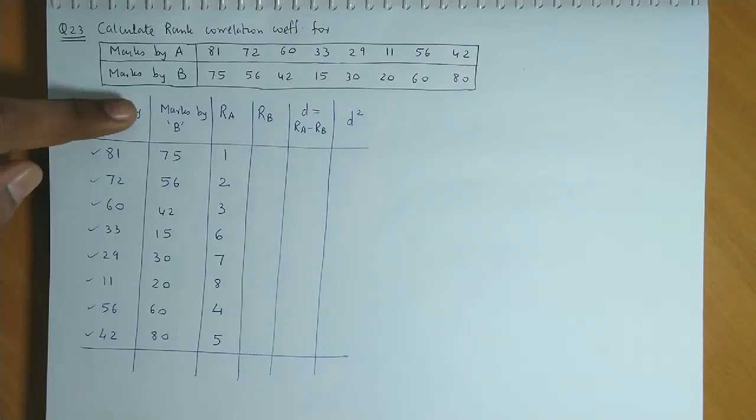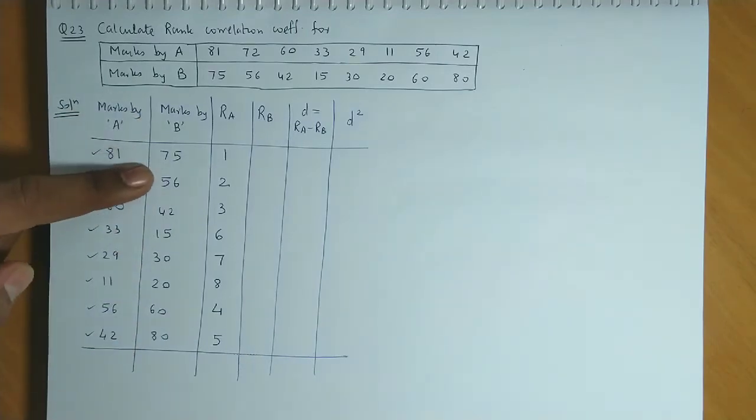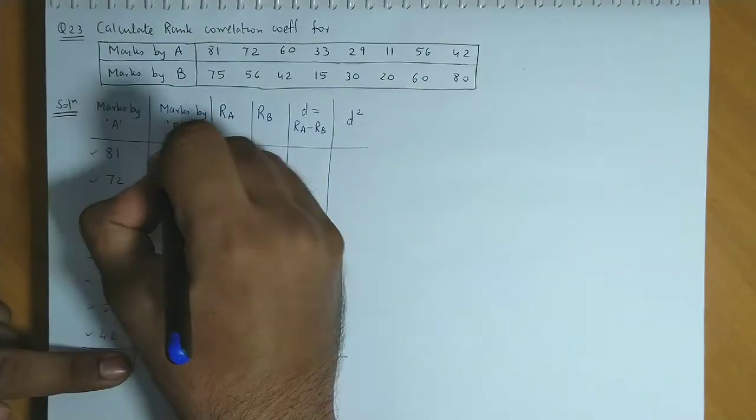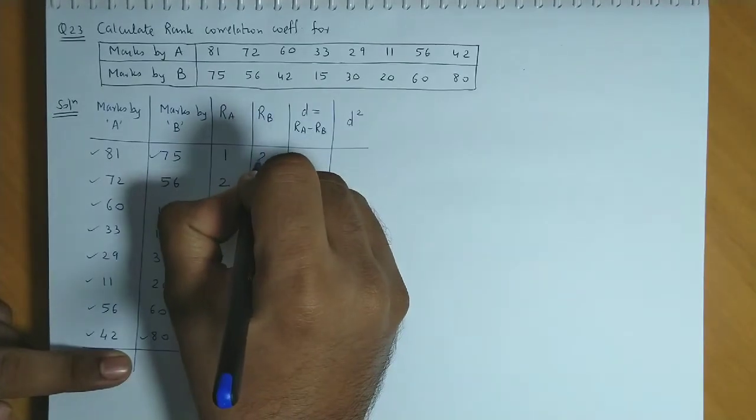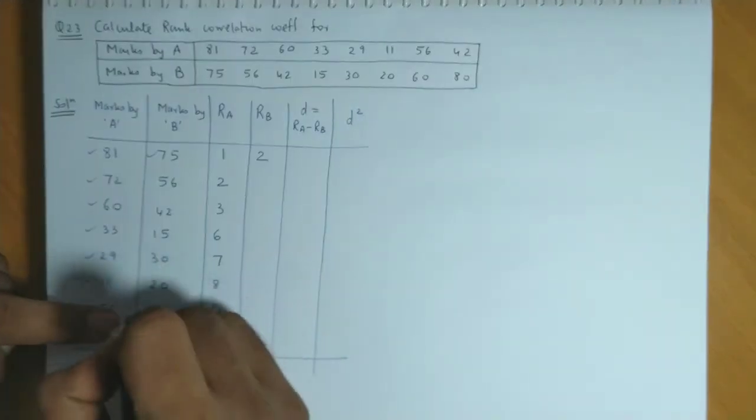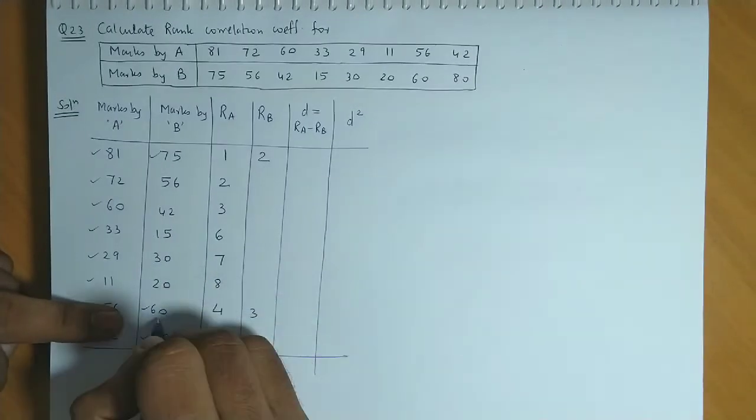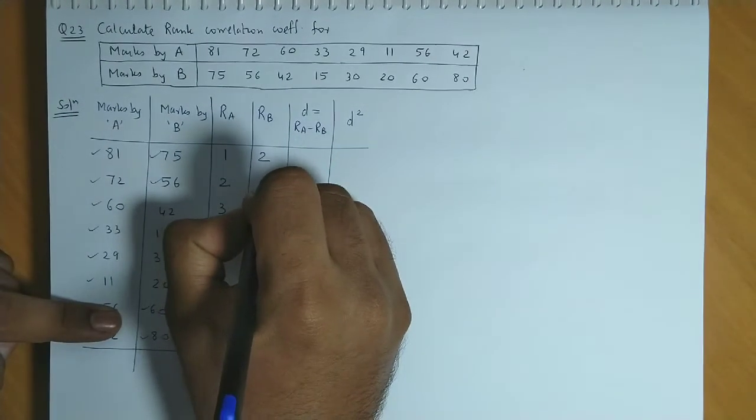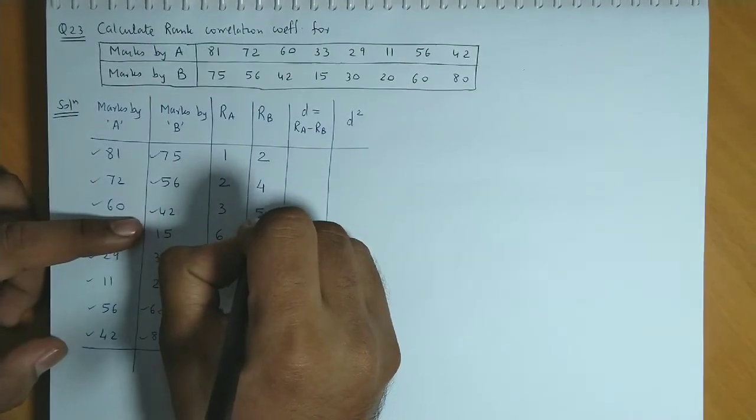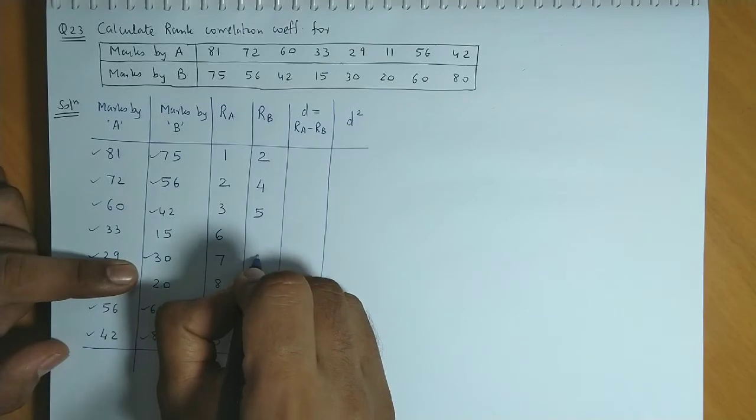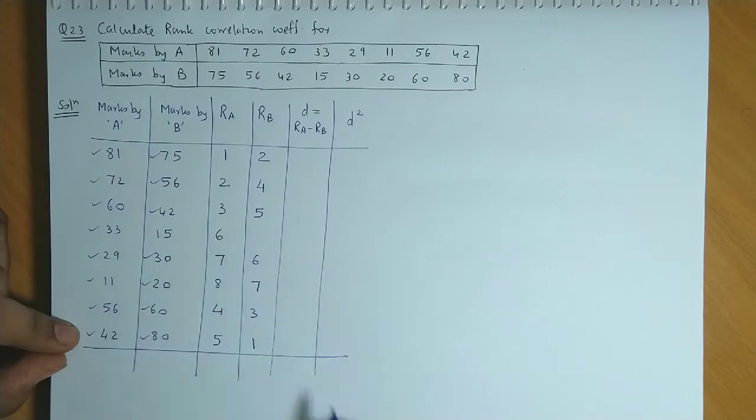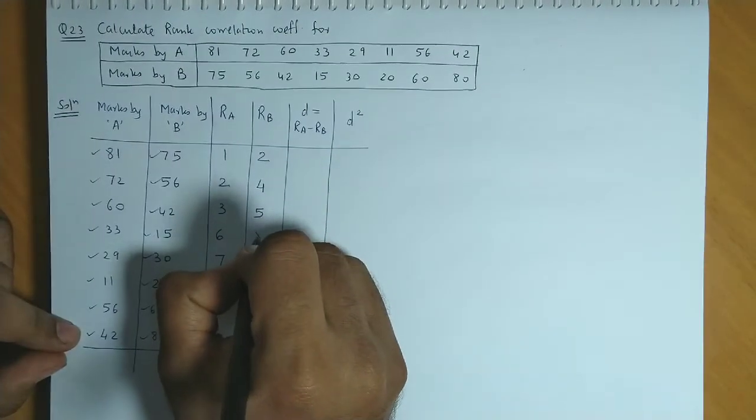Now for B, 75 gets rank 1, 95 gets rank 2, 80 gets rank 3, then 56 is rank number 4, then 42 is rank number 5, next would be 30, rank number 6, then 20, rank number 7, and lastly 15, that is rank number 8.